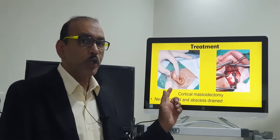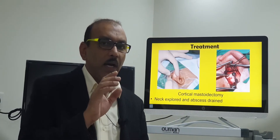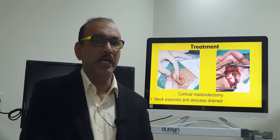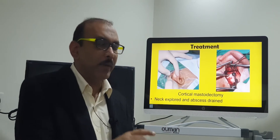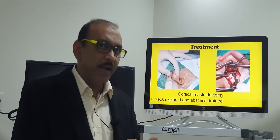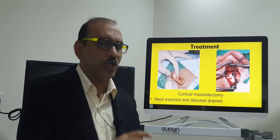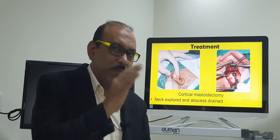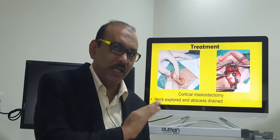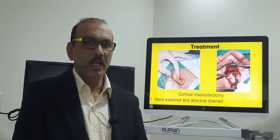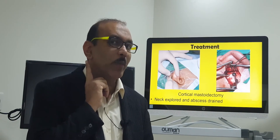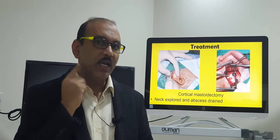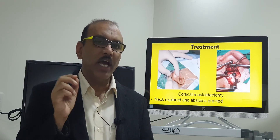The main pus formation is seen inside the mastoid air cell system and behind the eardrum. So we open up behind the ear, drill the mastoid out, remove all the cavities and pus, and also lift the eardrum to clear all the disease. For the abscess collection in the upper part of the neck, we make a separate incision, remove all the abscess, and put a small drain.